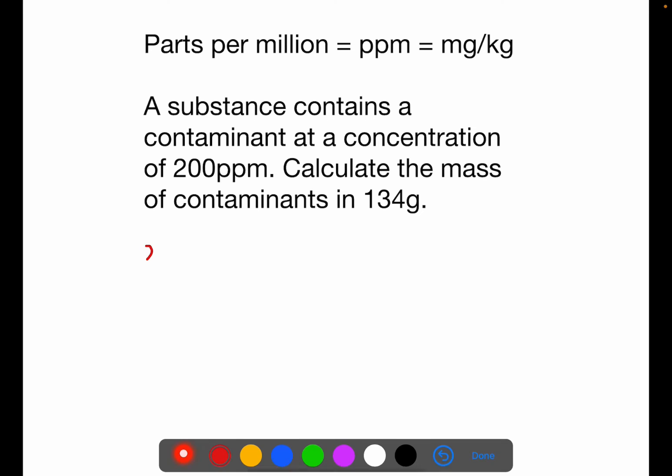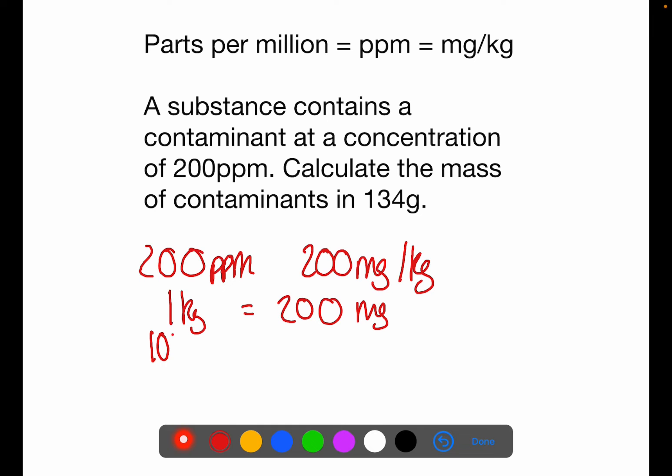So here we have 200 ppm. This is equivalent to 200 milligrams per kilogram. So if you had one kilogram of a substance you would have 200 milligrams of the contaminant. One kilogram is equal to 1000 grams. Therefore if you had one gram you would have 0.2 milligrams.